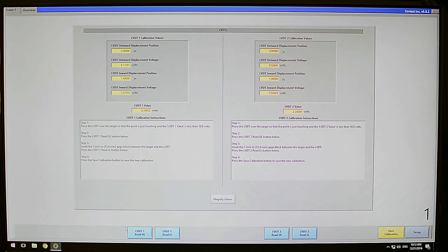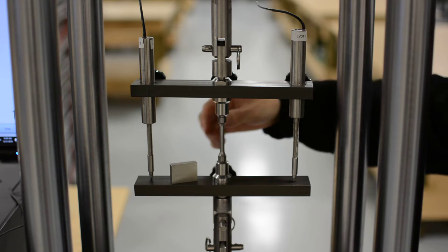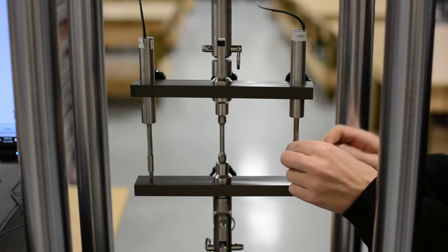Take a moment for the value to stabilize. Then click the button LVDT1 read UL, UL standing for upper limit. Place the 1 inch or 25 millimeter gauge block under the LVDTs probe.